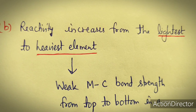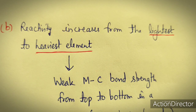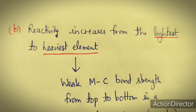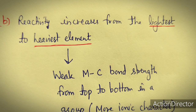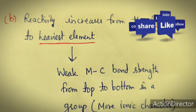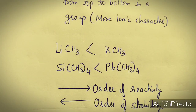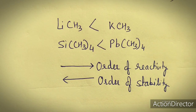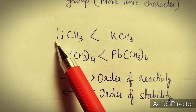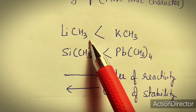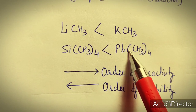The second point is that reactivity increases from the lightest to the heaviest element. In the case of S and P block elements, going from top to bottom, the MC bond strength weakens because size is also increasing. As size increases, the MC bond strength decreases, it becomes more ionic, and from top to bottom the ionic character of the MC bond increases. So stability decreases and reactivity increases. Comparing CH₃Li and CH₃K, the stability of CH₃K will be less compared to CH₃Li.